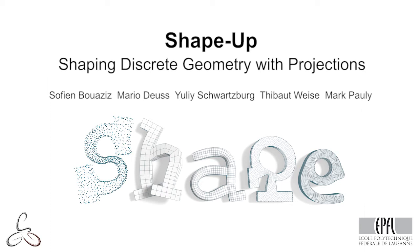We introduce a unified optimization framework for geometry processing based on shape constraints. These constraints prescribe the shape of certain collections of sample points, such as polygons, one-ring cells, volume elements, or feature curves.